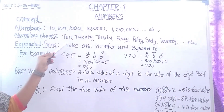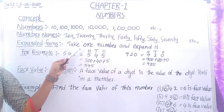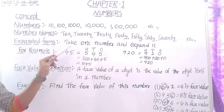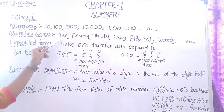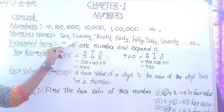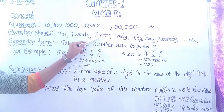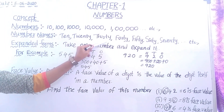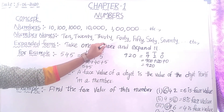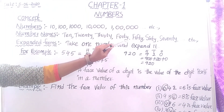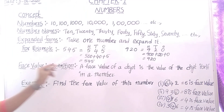Next, number names. Number name means what? A number written in word form. Like TEN for 10, TWENTY for 20, THIRTY for 30, FORTY for 40, and so on.